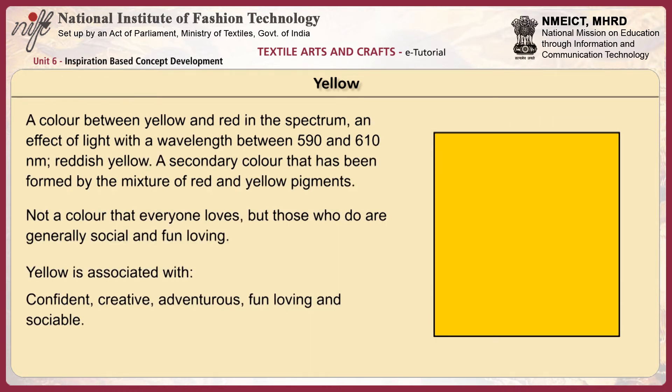Orange is a color between yellow and red in the spectrum, with a wavelength between 590 and 610 nm — a reddish yellow and a secondary color formed by the mixture of red and yellow pigments. Not a color that everyone loves, but those who do are generally social and fun-loving.